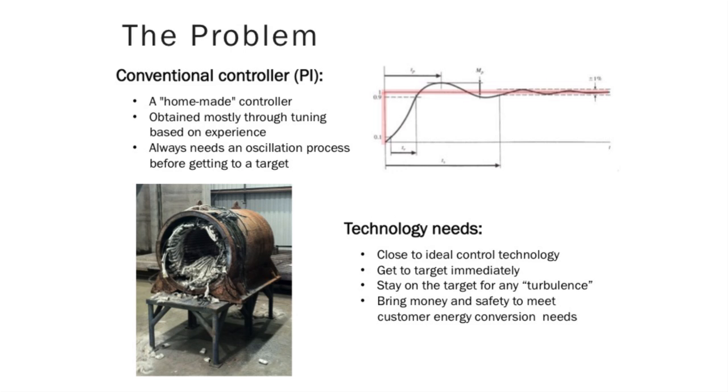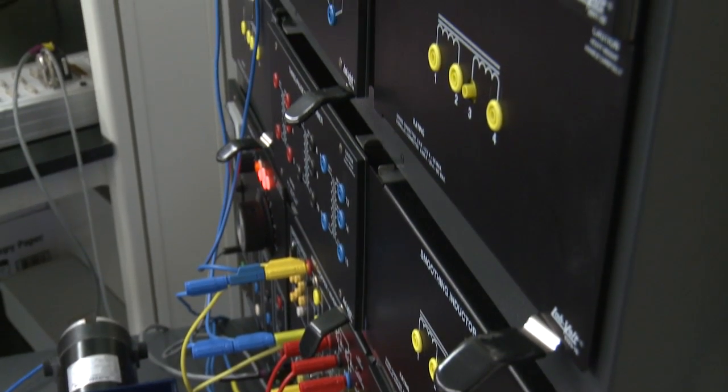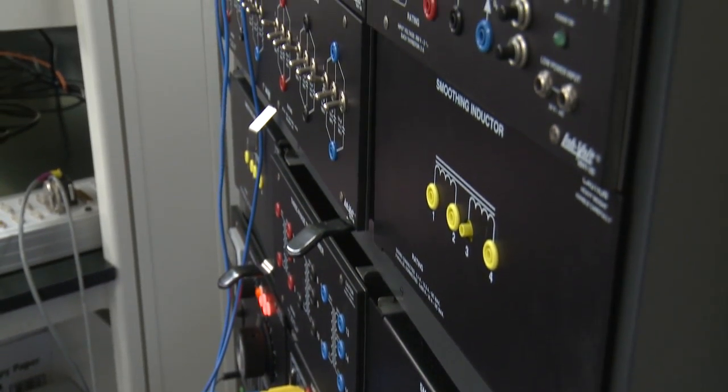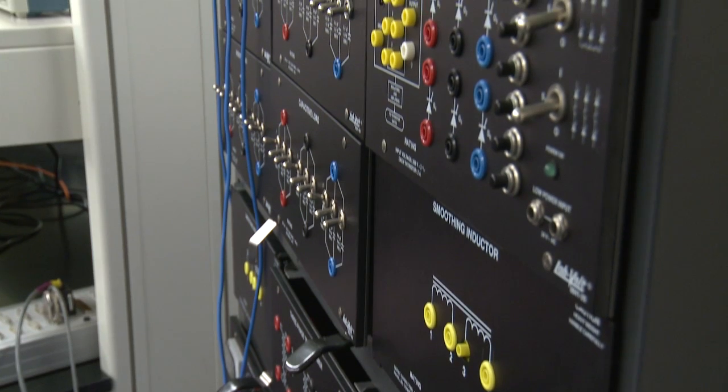A major problem for existing electric motors is quality control. Specifically, how to control a motor in a way that greatly reduces oscillation. The oscillations lower power quality, reduce the lifetime of motor control systems, and degrade the quality of products that depend on the motor controlled systems.